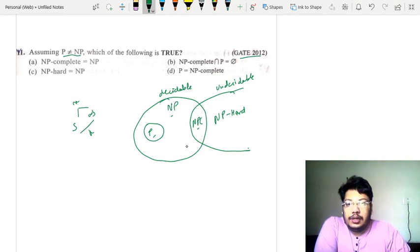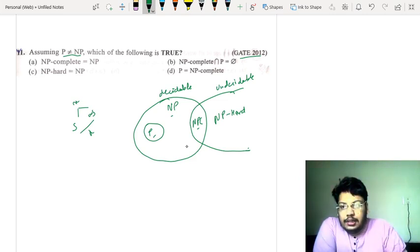Now, what have we asked? The option is NP-complete equal to NP. So NP-complete and NP - can NP-complete equal to NP? Not in this diagram. So this is wrong.